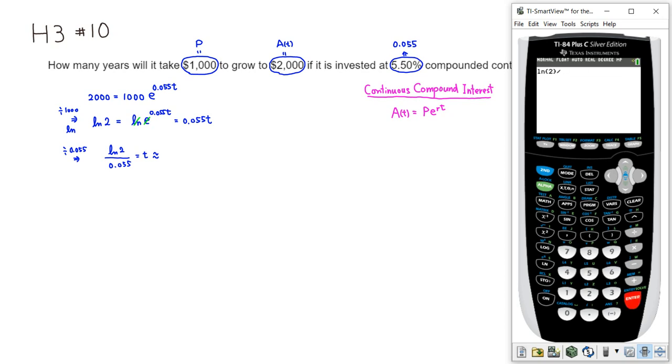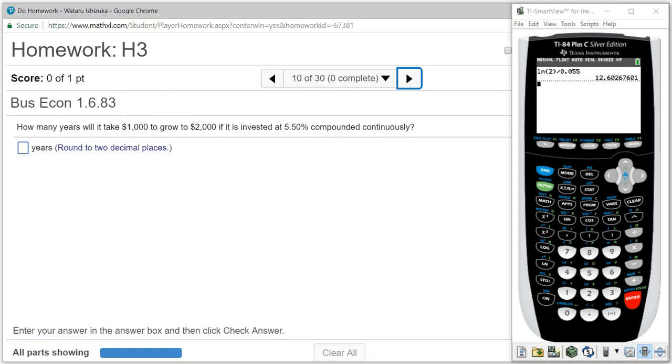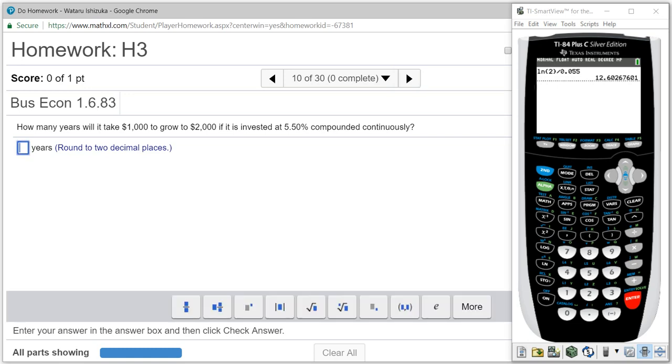Then I hit enter. All right, so we got 12.60 and so on. I forgot, let's see. We want to round it to two decimal places. So it's going to be 12.60.